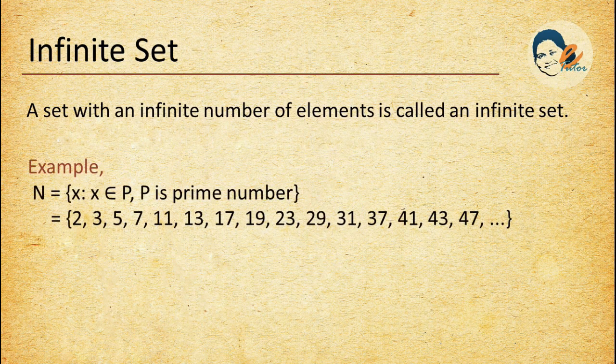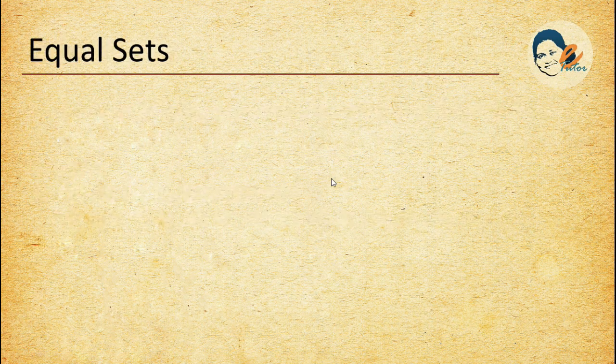Infinite set: a set with an infinite number of elements is called an infinite set. Example: {x such that x belongs to P, where P is the set of prime numbers} represents all the prime numbers with no limits, so this is an example of an infinite set.